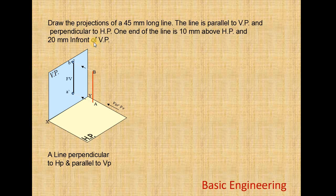This is the top view direction. When you see from the top view, points B and A coincide with each other, and both fall on the reference plane. This is the top view of line AB — both points coincide with each other, and we get the top view here as a single point.